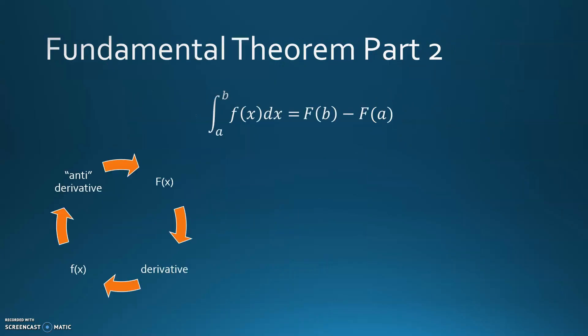The tool we're going to use is the second part of the fundamental theorem of calculus. It says that if you want to evaluate an integral from a to b of a function, find any anti-derivative of your function, evaluate it at b and a, and subtract. To prove this, I'm going to define big F as the integral from c to x of little f.